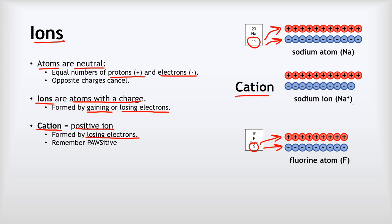Here is our sodium ion. The number of protons hasn't changed — we've still got the 11 protons we had to start with, but now we've got 10 electrons. It has lost one. That electron has gone, and that means we've now got one more positive charge than negative charge, so it's positive overall.